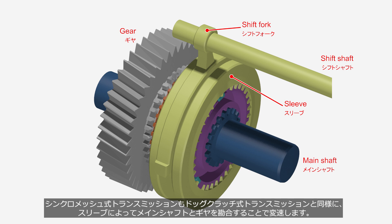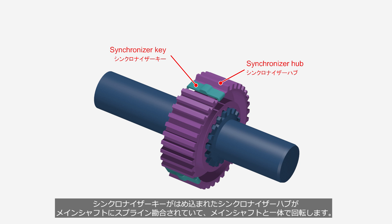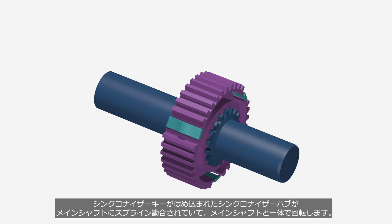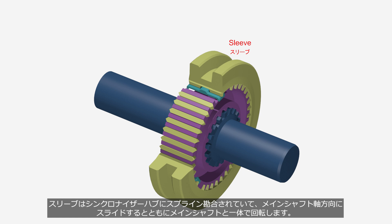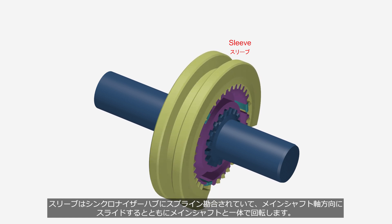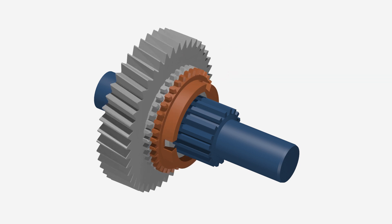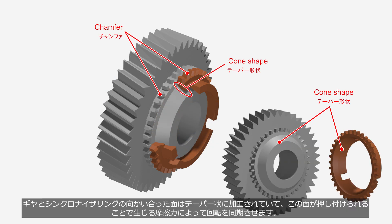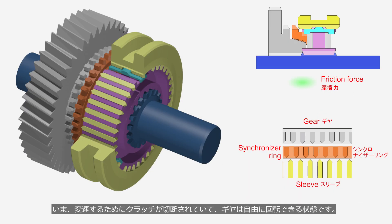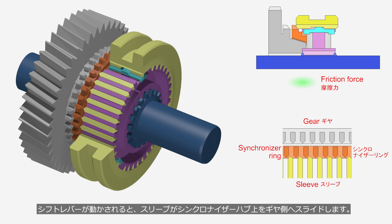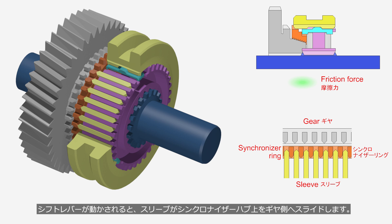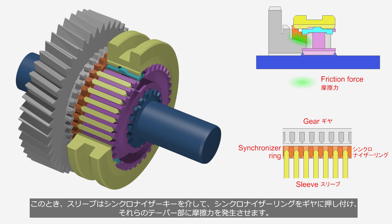Same as dog clutch transmissions, in synchromesh transmissions the sleeve engages the gear and the main shaft for gear shifting. The synchronizer hub with the synchronizer key inserted is spline-engaged to the main shaft and rotates integrally with it. The sleeve is spline-engaged to the synchronizer hub, allowing it to slide axially along the main shaft and rotate integrally with it. The synchronizer ring and the gear are not fixed to the main shaft and rotate freely. They have small teeth called chamfers. The surfaces facing each other on the gear and the synchronizer ring have a cone shape. When the driver moves the shift lever, the sleeve slides on the synchronizer hub toward the gear. The sleeve presses the synchronizer ring against the gear through the synchronizer key, and their cone sections generate frictional force.